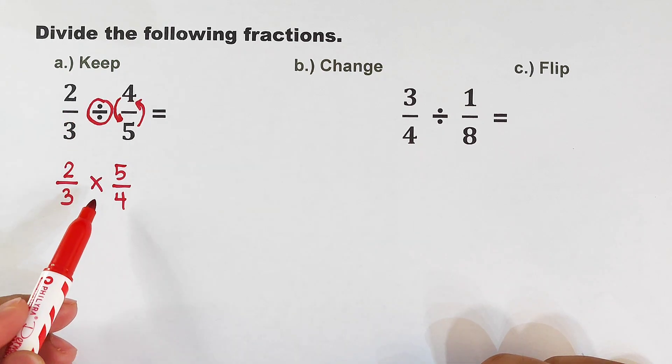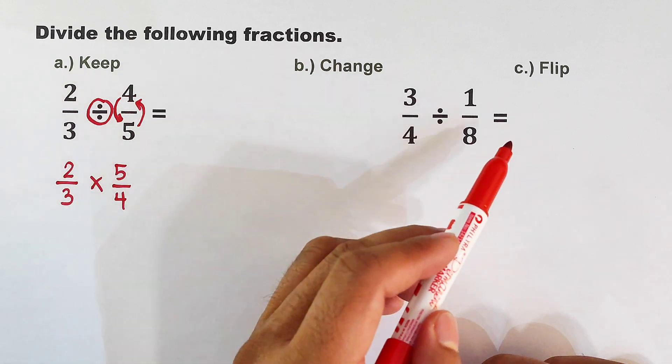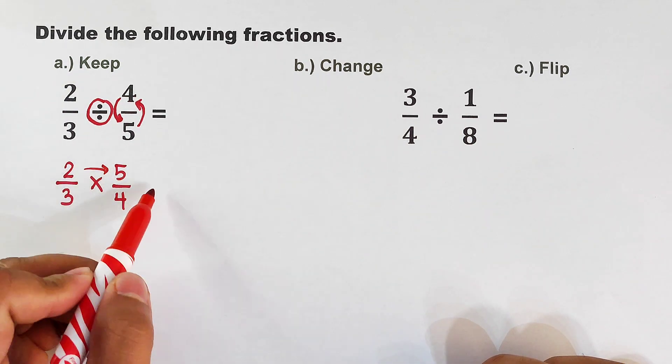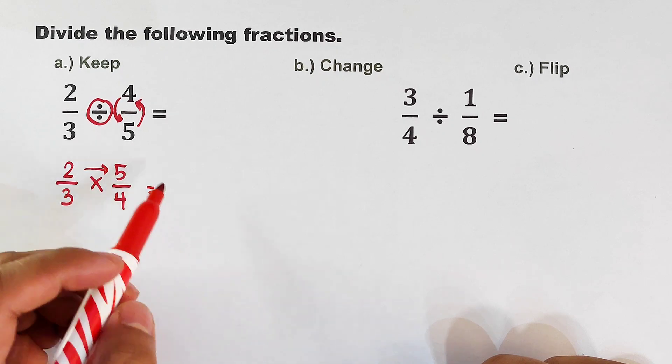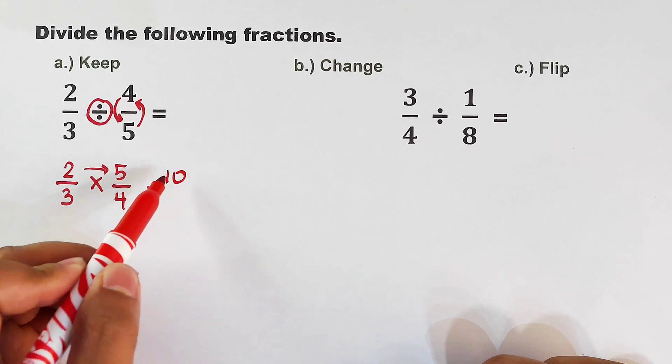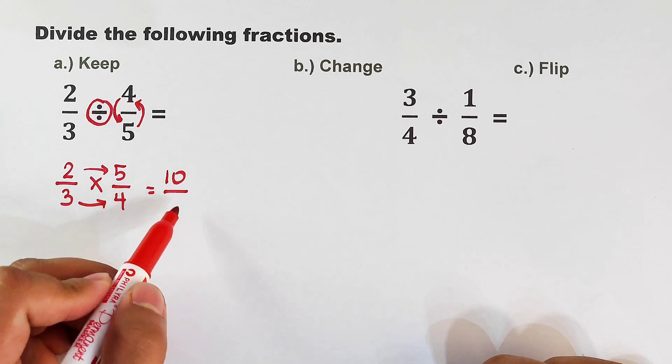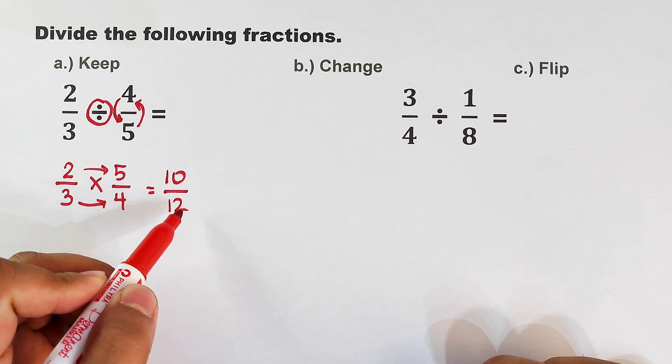Now as I have said earlier, since we're dividing, we will proceed with multiplication after the Keep, Change, and Flip. We will multiply. We have two times five that would be equal to 10 over three times four, that is equal to 12.